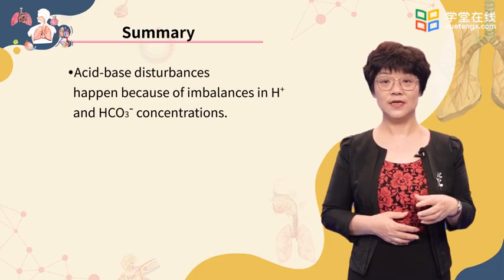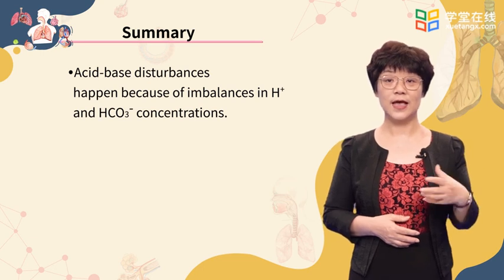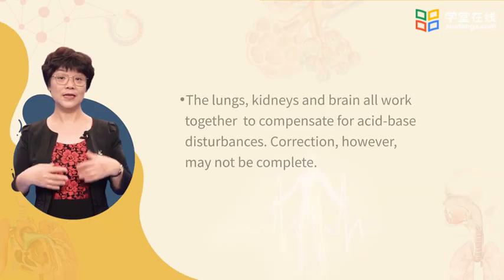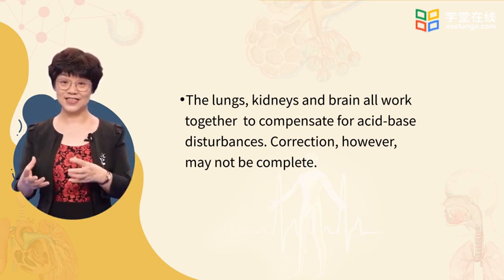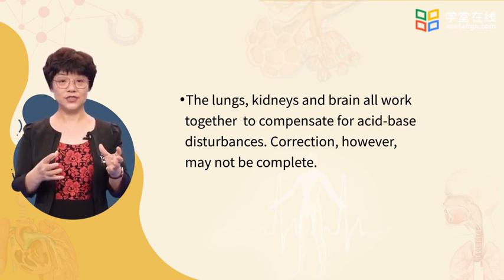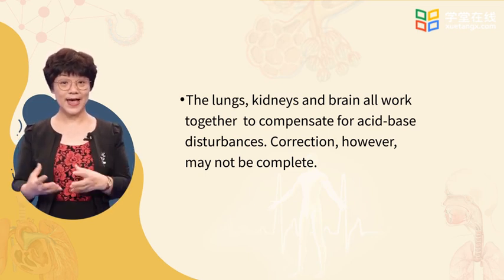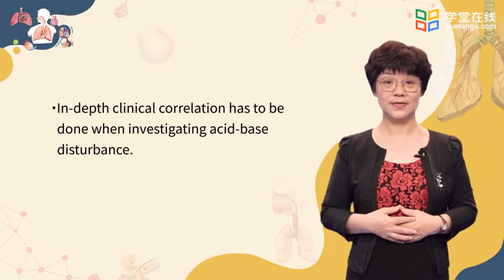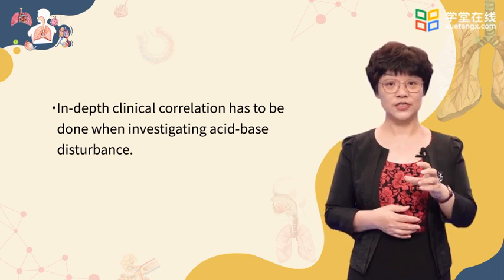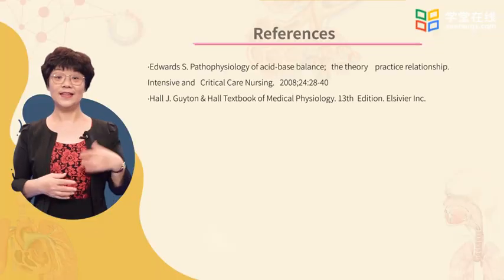In summary, acid-base disturbances develop because of imbalances in hydrogen and bicarbonate concentrations. The lungs, kidneys, and brain all work together to compensate for acid-base disturbances. However, correction or restoration of acid-base balance may not be complete. When investigating acid-base disturbance, in-depth clinical correlation is vital. Now we have finished the discussion on fluid, electrolytes, and acid-base balance. We encourage you to read more about how they affect the functions of the body. And that's all for this chapter.